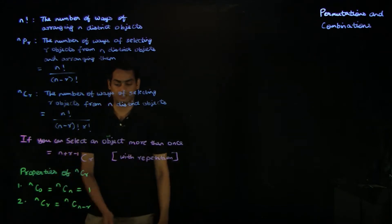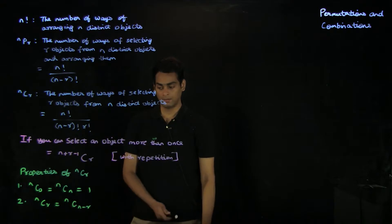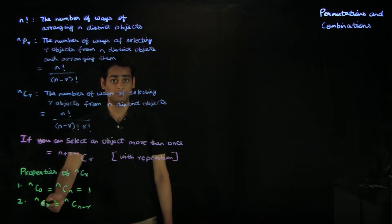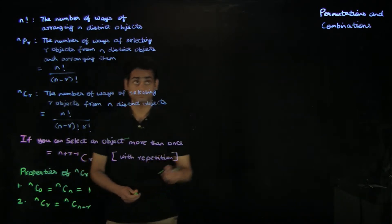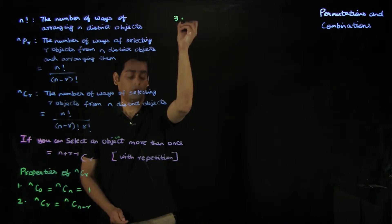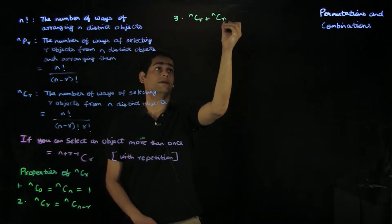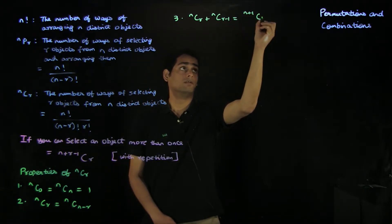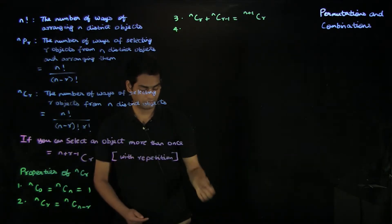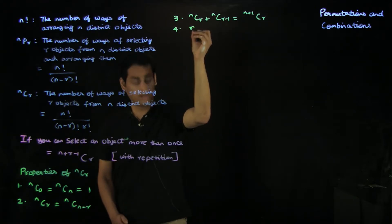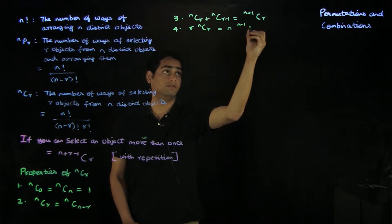You can derive the second property by plugging in suitable values in the definition of nCr. This tells us the number of ways of choosing r objects from n distinct objects equals the number of ways of choosing n minus r objects from n distinct objects. A third property, useful in many situations, is nCr plus nC(r minus 1) equals n+1Cr. And the final property is r times nCr equals n times n-1C(r minus 1).